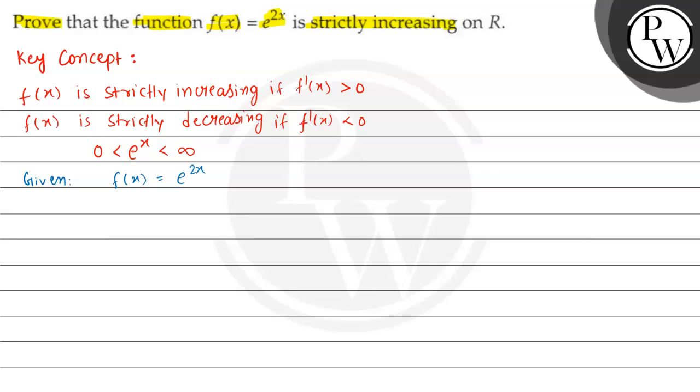Differentiating the given function, we will get derivative of x or f prime of x equal to d/dx of e to the power 2x. That will be e to the power 2x multiplied by the derivative of x. Here we have 2 times e to the power 2x.